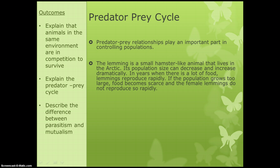An example of this is the lemming, which are small hamster-like animals that live in the Arctic. Their population changes dramatically depending on how much food there is, because lemmings reproduce really rapidly. If there's lots of food they reproduce rapidly, and if there isn't any then they don't. If the population gets too big there isn't enough food anymore, and the female lemmings then slow down the rate at which they reproduce.